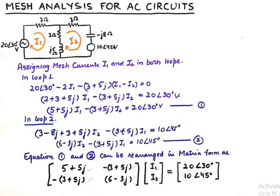So column number 1 will be the coefficients of the I1 matrix and column number 2 will be the coefficients of the I2 matrix and the coefficients are nothing but the impedances associated with I1 and I2.